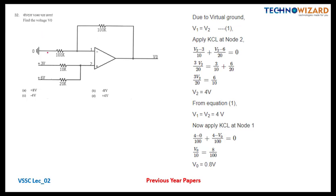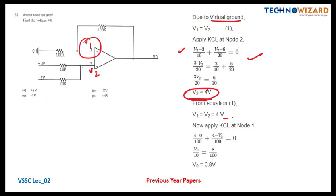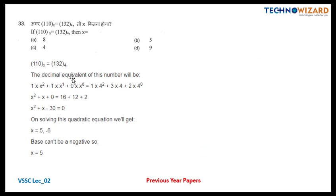Question number 32 is based on op-amps. Due to virtual ground, V1 equals V2. Applying KCL at node 2: (V2 − 3)/10K + (V2 − 6)/20K = 0, giving V2 = 4 volts, so V1 = 4 volts. Applying KCL at the output node: 4/100K + (4 − V0)/100K = 0, giving V0 = 0.8 volts as the correct answer.